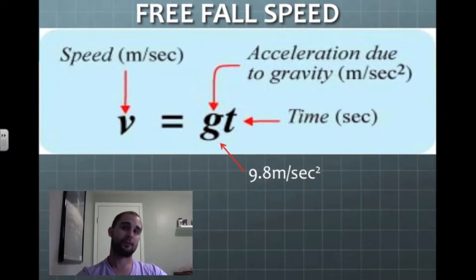This first slide, we're talking about free fall speed. This is the formula for free fall. Your G is represented by 9.8 meters per second squared, and it's acceleration due to gravity.